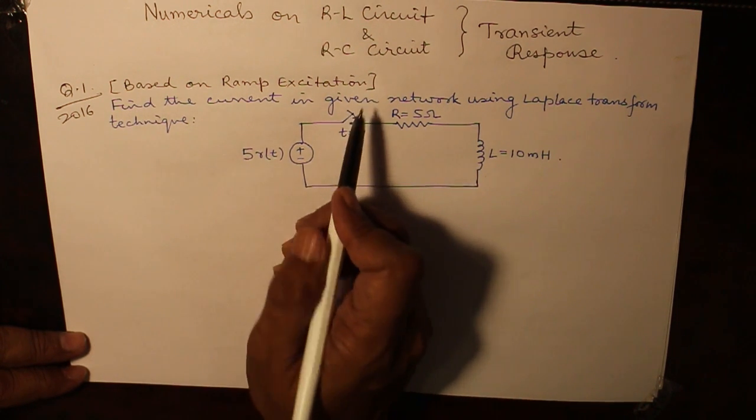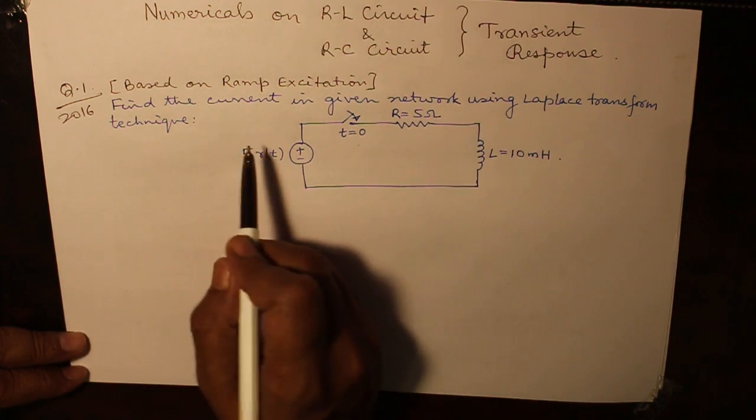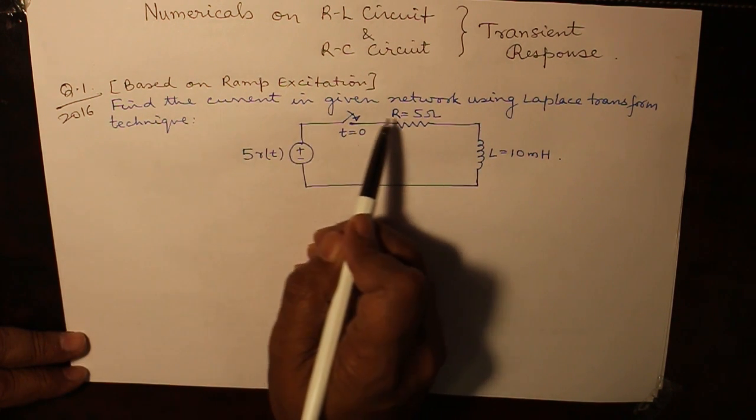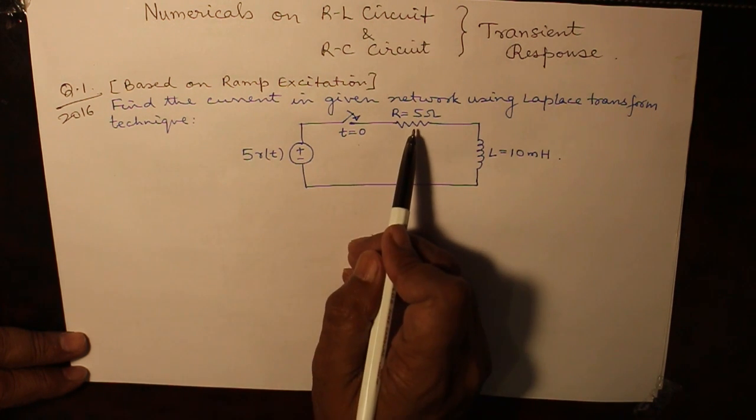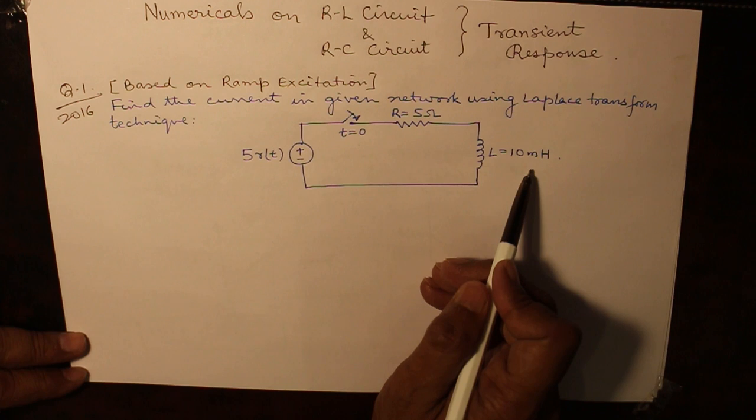The first one is based on ramp excitation. This was asked in 2016. You are required to find out the current in the given network using Laplace transform technique where R value is given to be 5 ohm and L is specified as 10 millihenry.